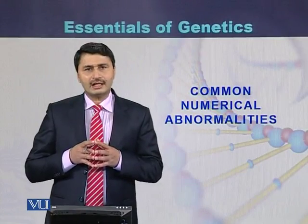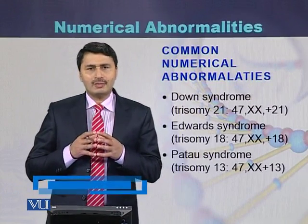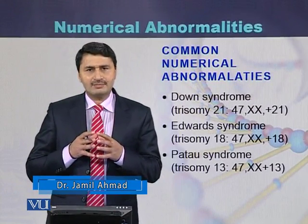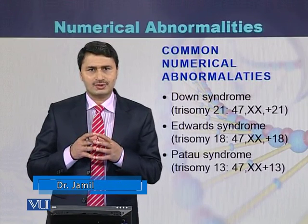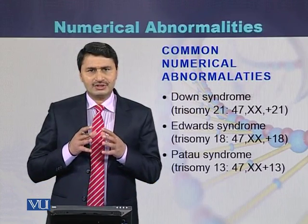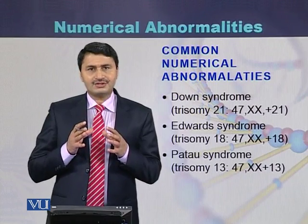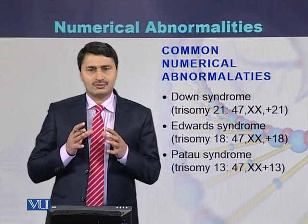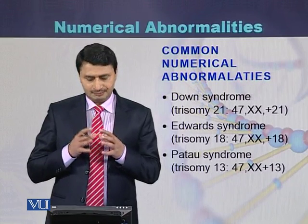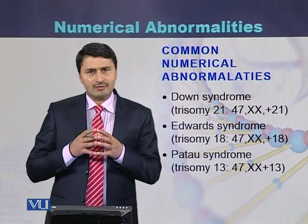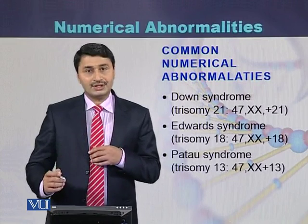Common numerical abnormalities can be due to the autosomes and they can also be due to the sex chromosomes. Common abnormalities due to the autosomes are Down syndrome, Edwards syndrome, and Patau syndrome. Down syndrome is a trisomy of chromosome 21, Edwards syndrome is a trisomy of chromosome 18, and Patau syndrome is a trisomy of chromosome 13.